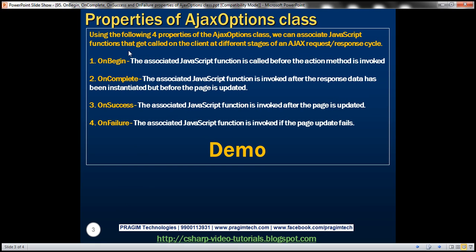Using these four properties of the AJAX Options class, we can associate JavaScript functions that get called on the client at different stages of an AJAX request-response cycle. The associated JavaScript function with the OnBegin property is automatically called before the server-side action method is invoked.